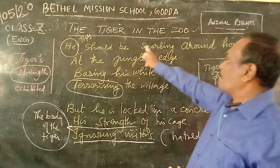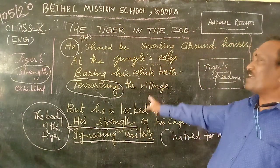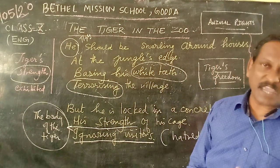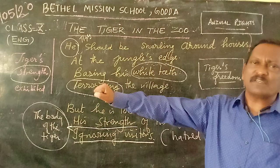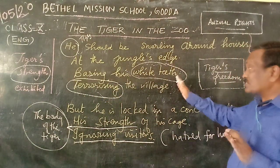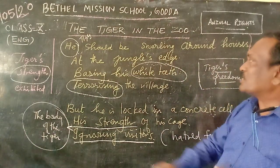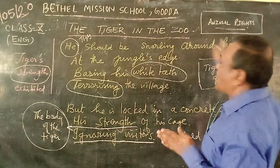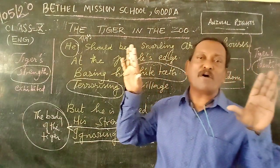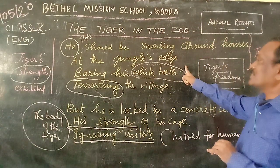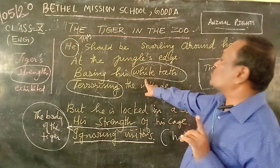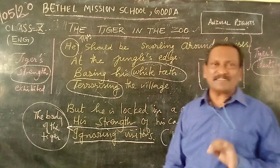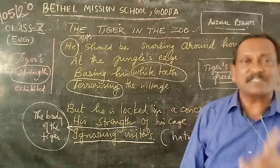And at the jungle's edge, baring his white teeth, terrorizing the village. The white teeth possessed by the tiger are very sharp — they can tear the meat in a fraction of a second, and they give strength and identity to the tiger. The tiger comes near the border of the jungle and goes around the houses showing his strong white teeth, which become his identity, terrorizing the village. The tiger terrorizes the village, but he does not kill any people unless he is provoked.